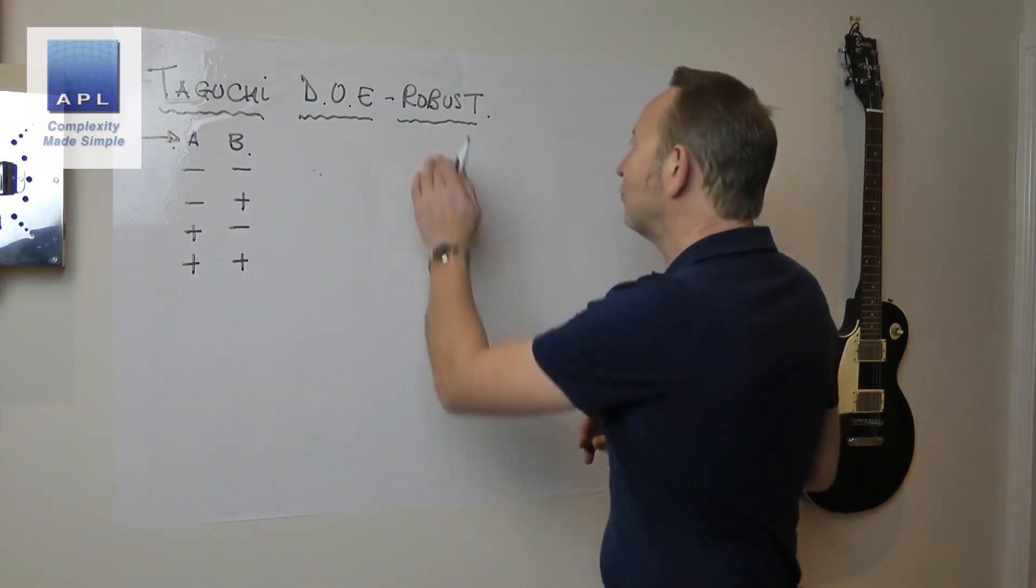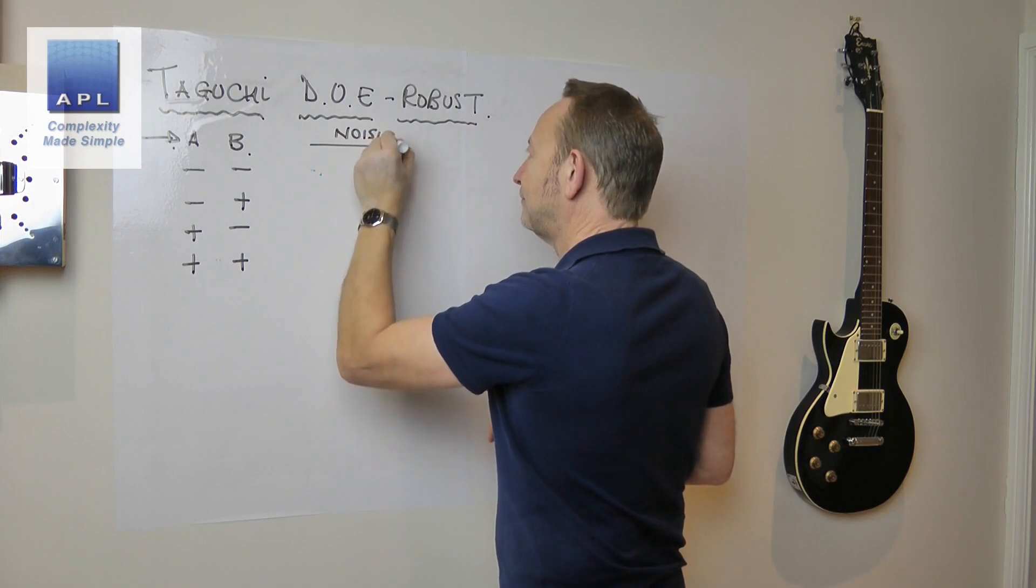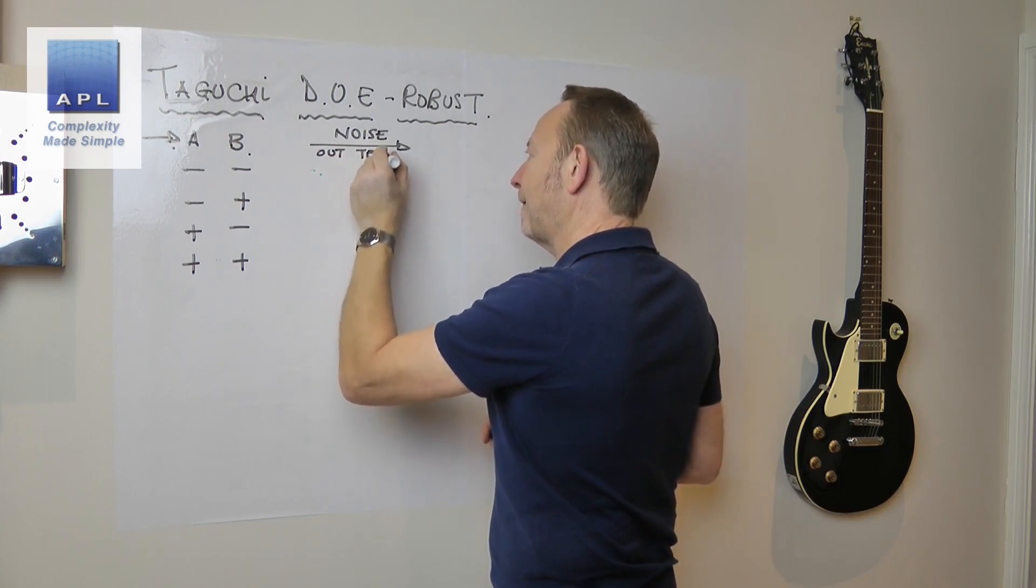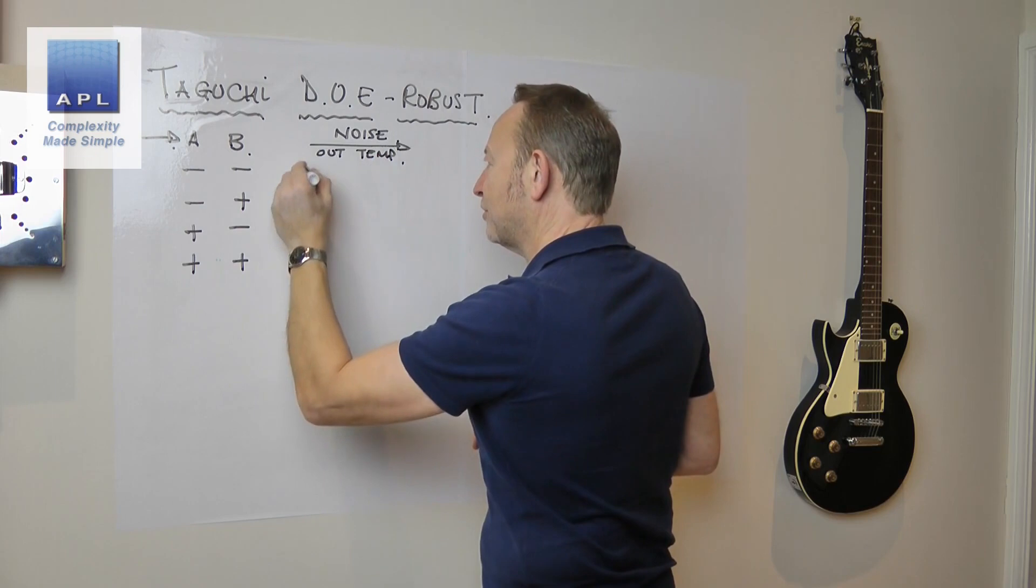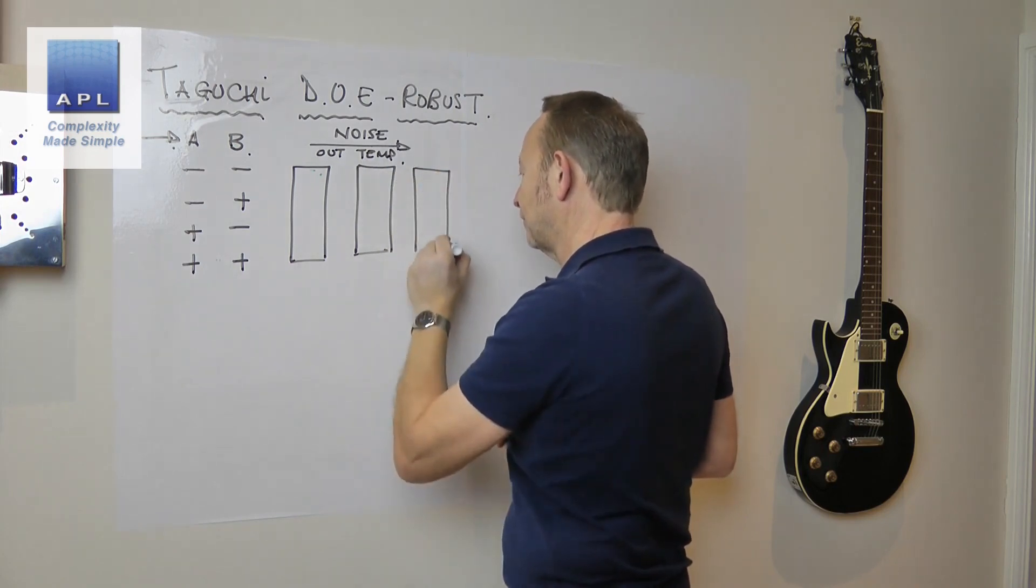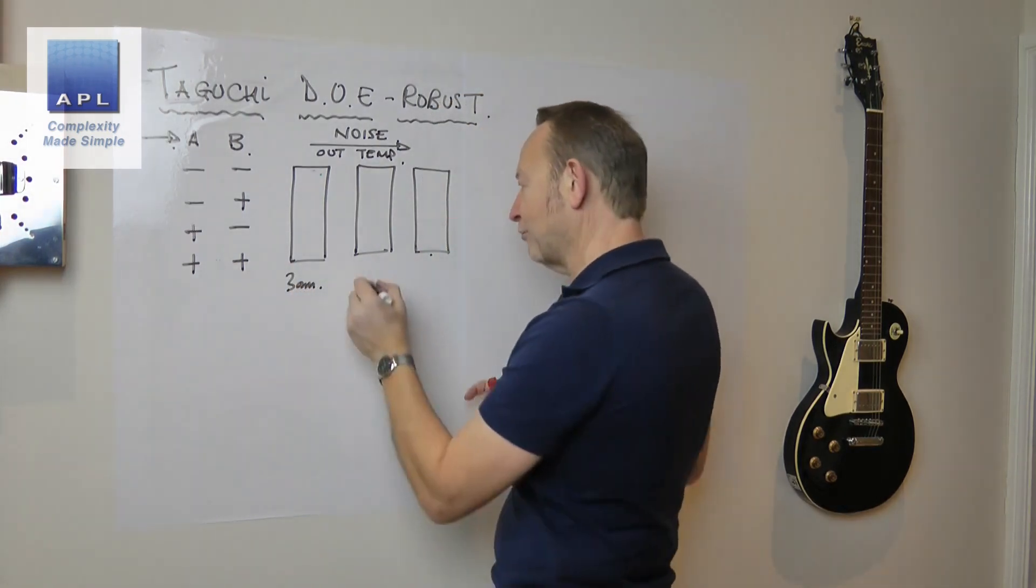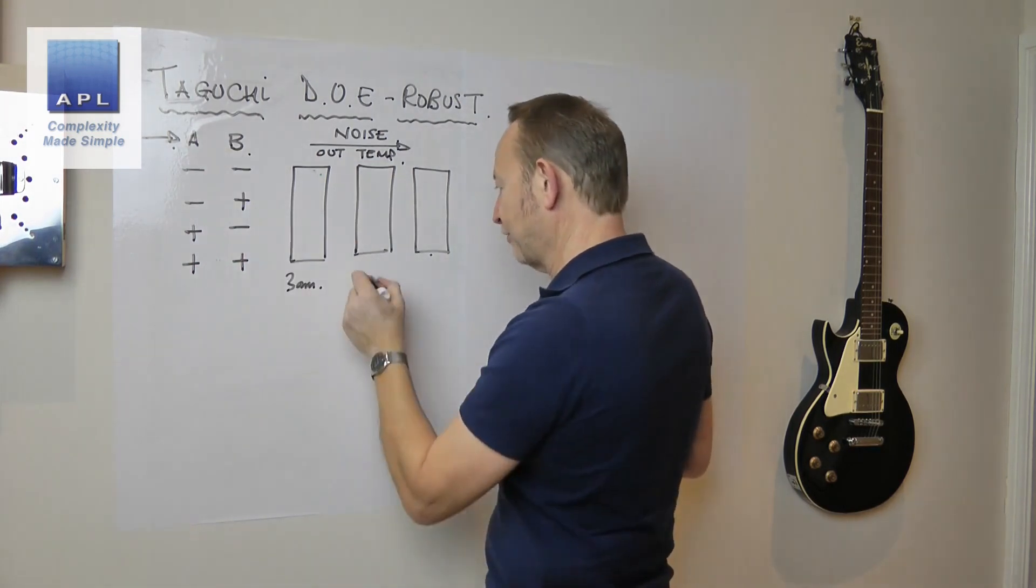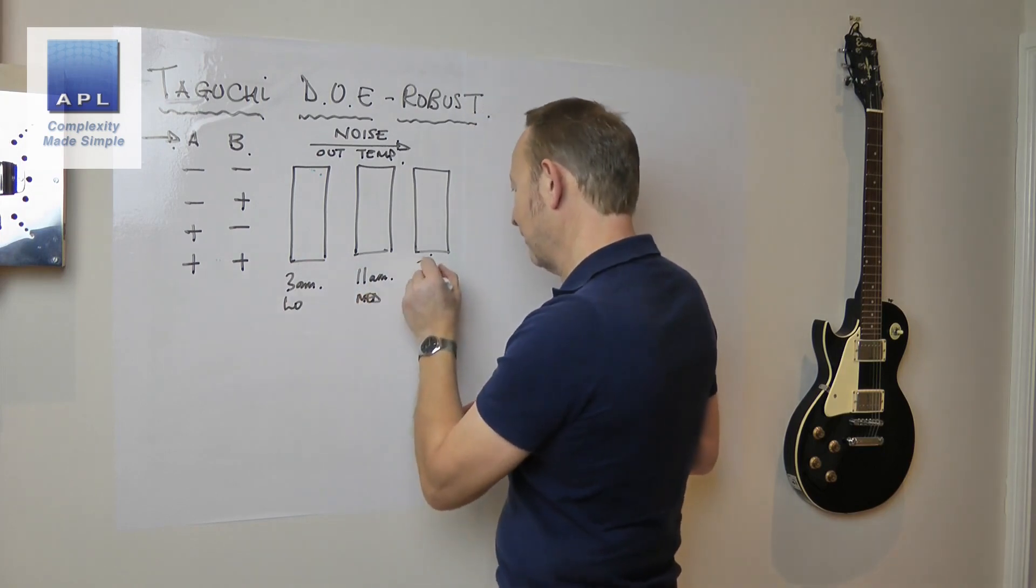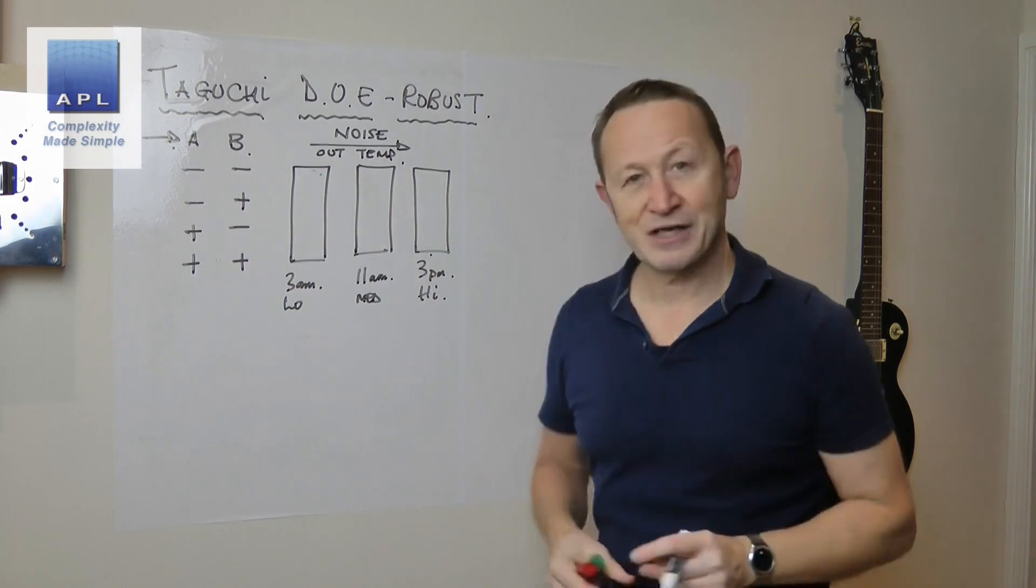So where does the robust variable appear? Well, it appears in your data collection as a noise variable. So let's say this was outside temp. What you would simply do is do your DOE three times. So maybe you would do this data collection at a cool part of the day, three o'clock in the morning. You do another repetition of the DOE. It's a medium temp. So this would be low temp. This would be medium temp. And then we come back at the hottest part of the day when the temperature's at the highest. And we would collect data like that.